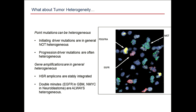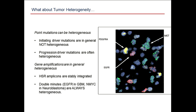Initiating driver mutations — things like KRAS, ALK, ROS1, and EGFR — in my opinion and experience, are not heterogeneous. Leisha Sequist in our institution has biopsied over 150 EGFR-positive lung cancer patients following relapse on an EGFR inhibitor, and every single one of them at relapse has the same original mutation. Progression driver mutations are often heterogeneous — a second PIK3CA or beta-catenin mutation, for instance. So if you're looking for the initiating driver mutation, you don't need to be stressed that this is the wrong drug.